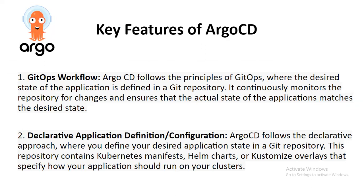Now let's look at the key features of ArgoCD. First is the GitOps workflow: ArgoCD follows the principle of GitOps where the desired state of the application is defined in a Git repository, and it continuously monitors the repository for changes to ensure the actual state of the application matches. Second is declarative application definitions and configuration: ArgoCD follows a declarative approach where you define the desired application state in a Git repository, and this repository contains Kubernetes manifests, Helm charts, or Kustomize overlays that specify how an application should run on your cluster.